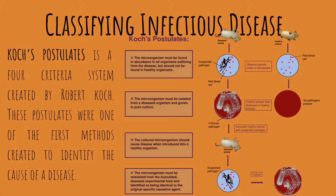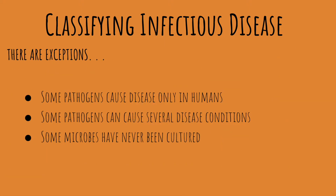Koch's Postulates is a four-criteria system created by Robert Koch — one of the first methods to help identify the cause of a disease. The four criteria are: (1) the microorganism must be present in every case of the disease; (2) the organism must be isolated from the host and grown in pure culture; (3) the pure culture pathogen must cause the disease when placed on a healthy host; and (4) the pathogen must be re-isolated from the new host and shown to be the original pathogen.